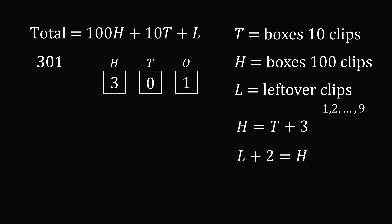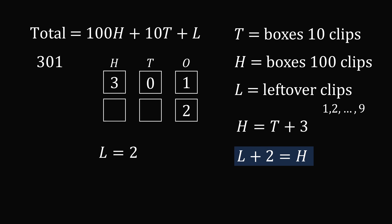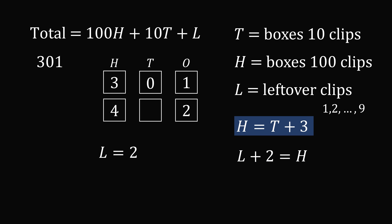There are other possibilities. If L equals 2, this corresponds to a ones column of 2. Then L plus 2 equals H, so the hundreds column is 4. Then H equals T plus 3, so subtracting 3 from 4 gives T equals 1. So right away we have another possible answer: 412. That's 2 leftover clips, 1 box of 10, and 4 boxes of 100.